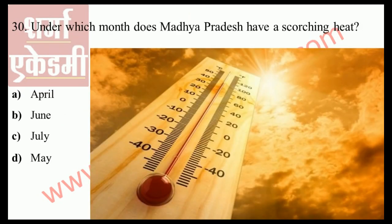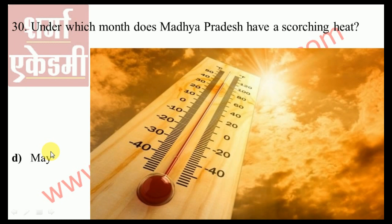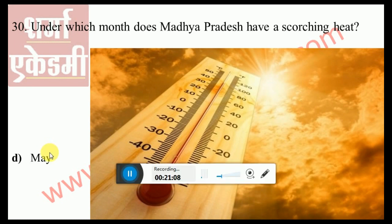Under which month does Madhya Pradesh have scorching heat? The correct answer is May. In the month of May, Madhya Pradesh generally receives the highest amount of heat and the temperature is at its maximum.